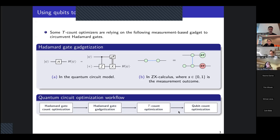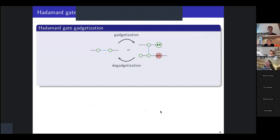Once all the Hadamard gates have been gadgetized, we can optimize the number of T gates. At this point in the workflow, what we have is a circuit with an optimized number of T gates, but with an important number of qubits because we used one ancilla qubit for each Hadamard gate. So what we want to do is to add a final step to reduce the number of qubits without increasing the number of T gates.